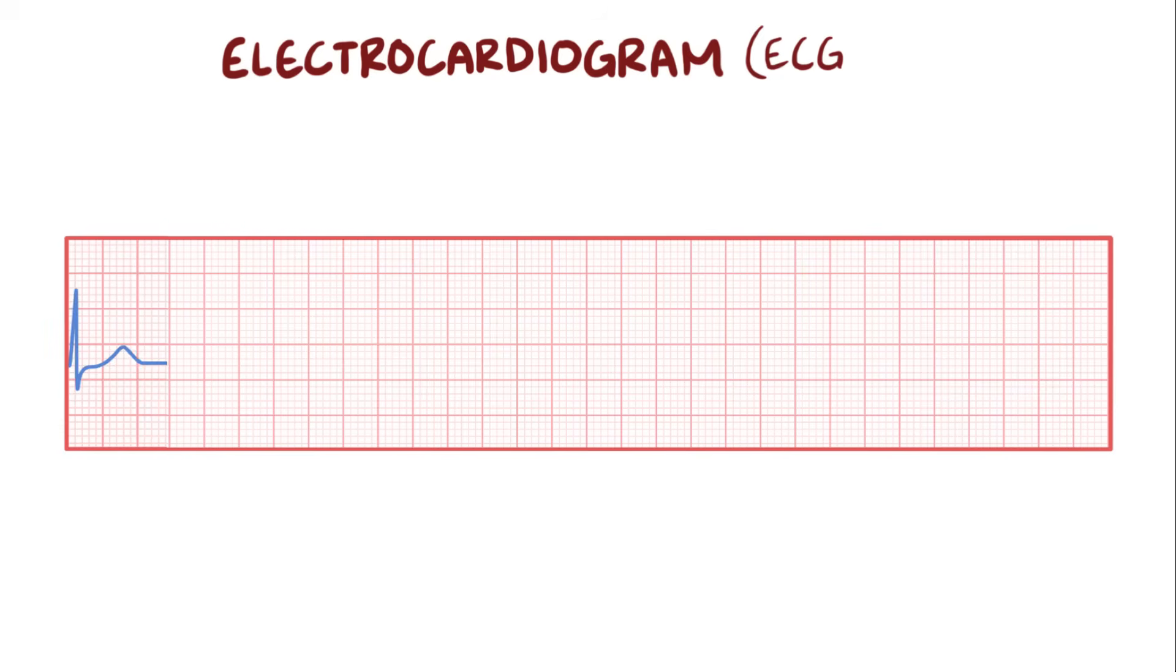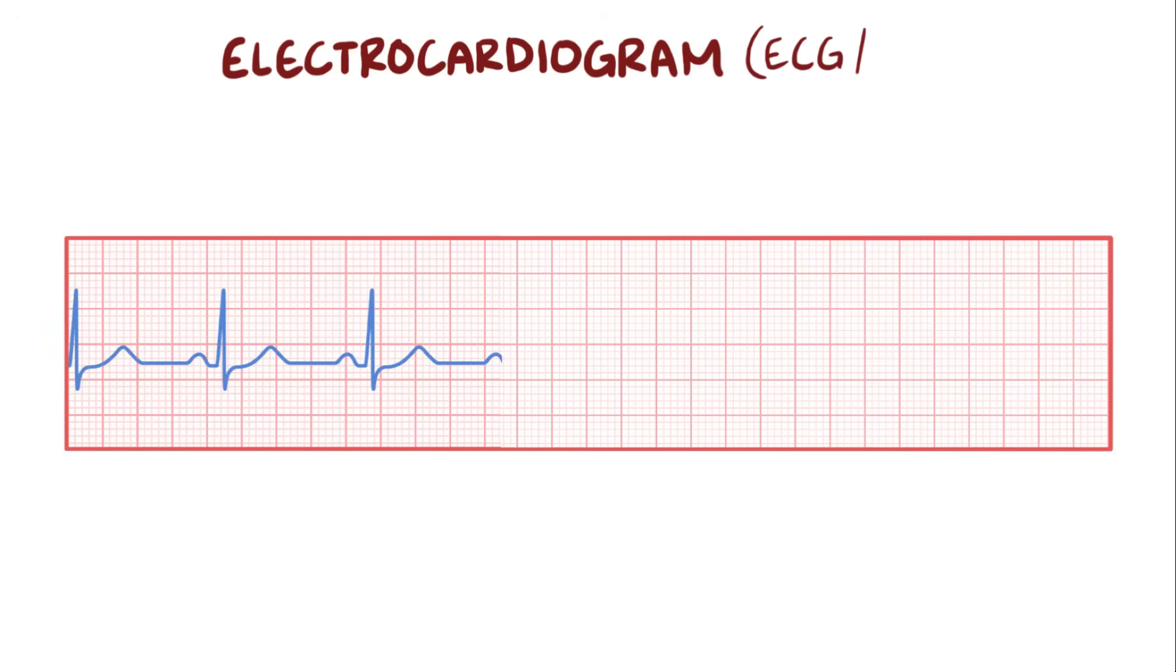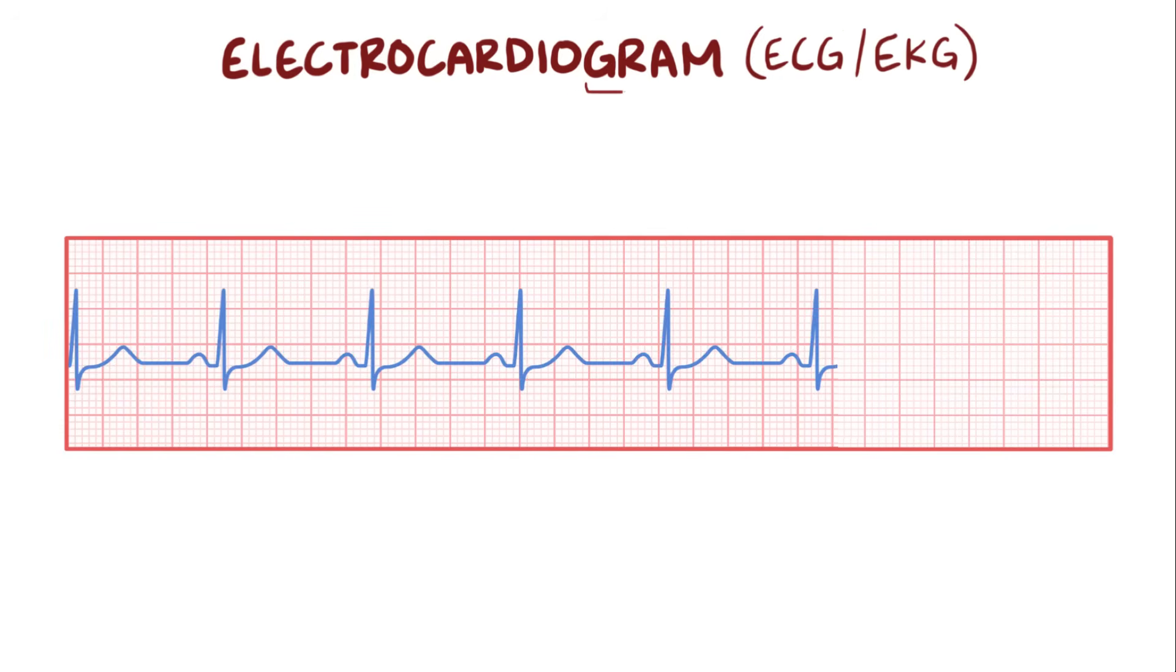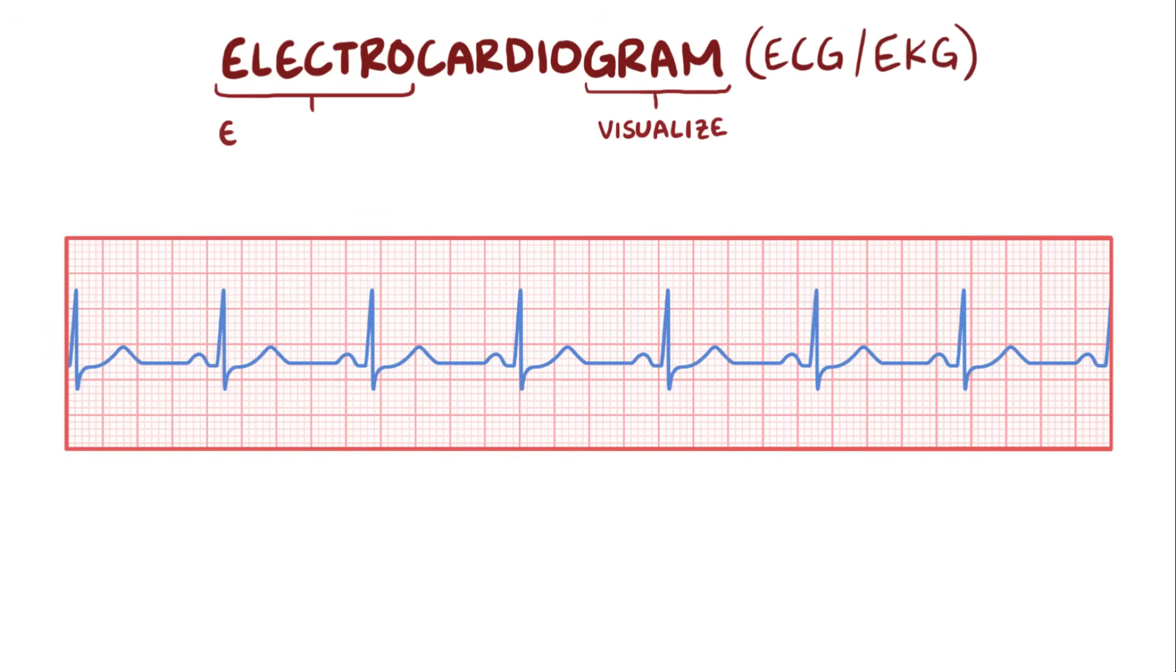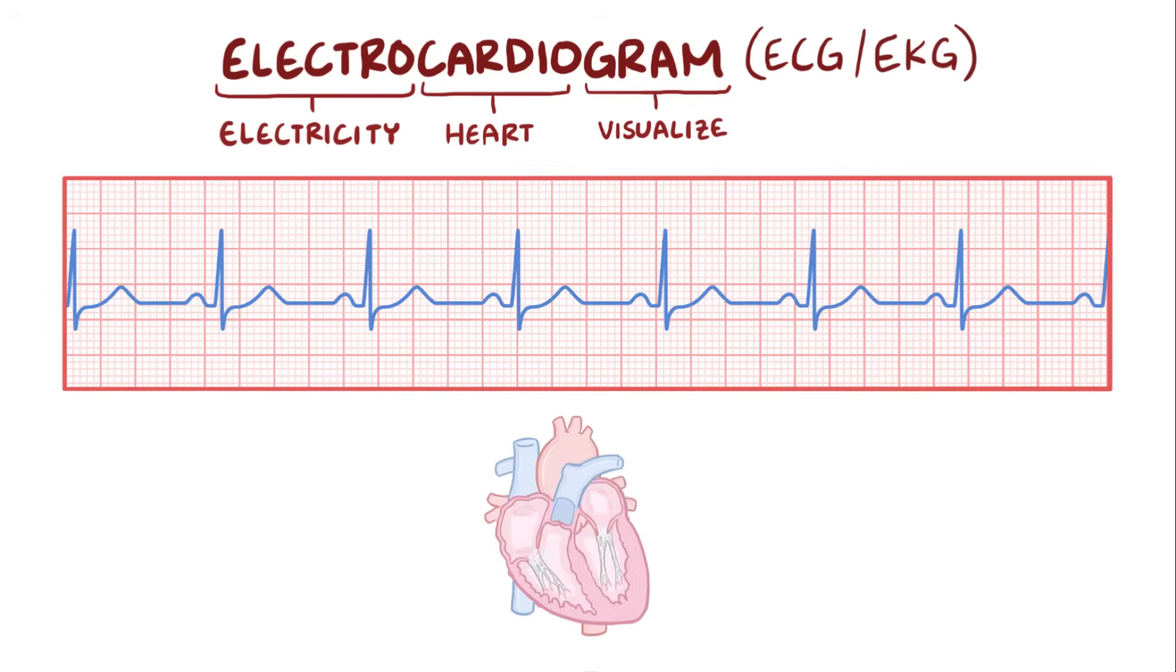An electrocardiogram, or ECG, or the Dutch or German version of the word EKG, is a tool used to visualize the electricity that flows through the heart. An ECG tracing specifically shows how the depolarization wave moves during each heartbeat, which is a wave of positive charge.